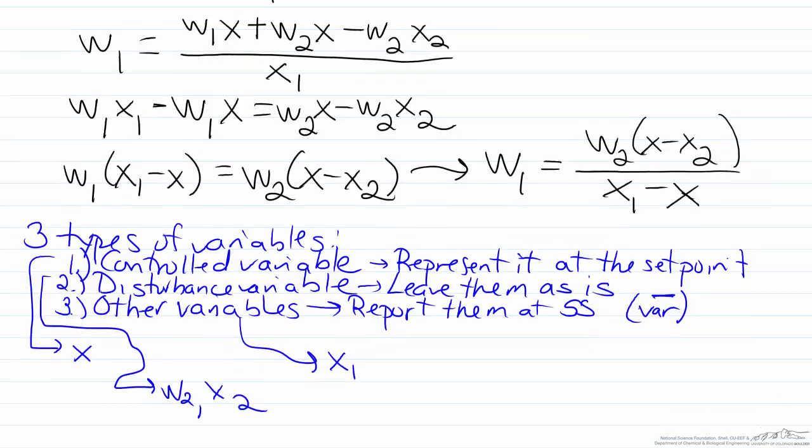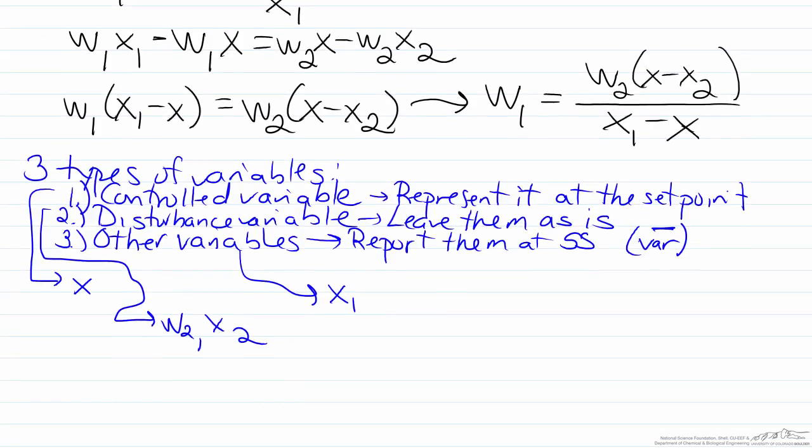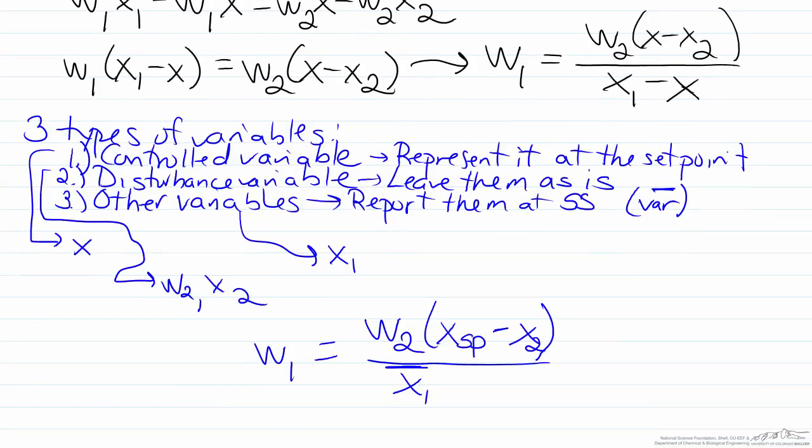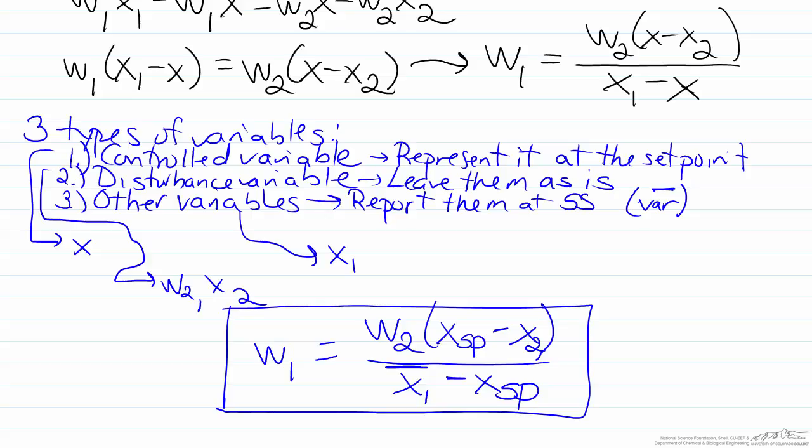Therefore for our final answer, putting this all together, W1 will equal W2, a variable that we can measure, multiplied by X set point minus X2, a variable that we can measure, divided by X1 bar, the steady state value, minus X set point. This is the development of our static or steady state feedforward controller.